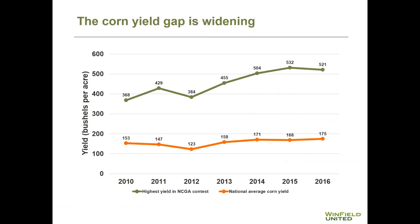To put this in context, national corn yields have been increasing very rapidly in the National Corn Growers Association yield contest. Over the last three years, we've had yields in excess of 500 bushels per acre. If we compare that to the national averages during the same time period, the yield gap between the National Corn Growers Association yield and the national average is about 350 bushels per acre — considering the 2016 difference between 521 bushels per acre and 175 bushels per acre. Each of the national corn grower yield contest winners has their own secret sauce for achieving those high yields.